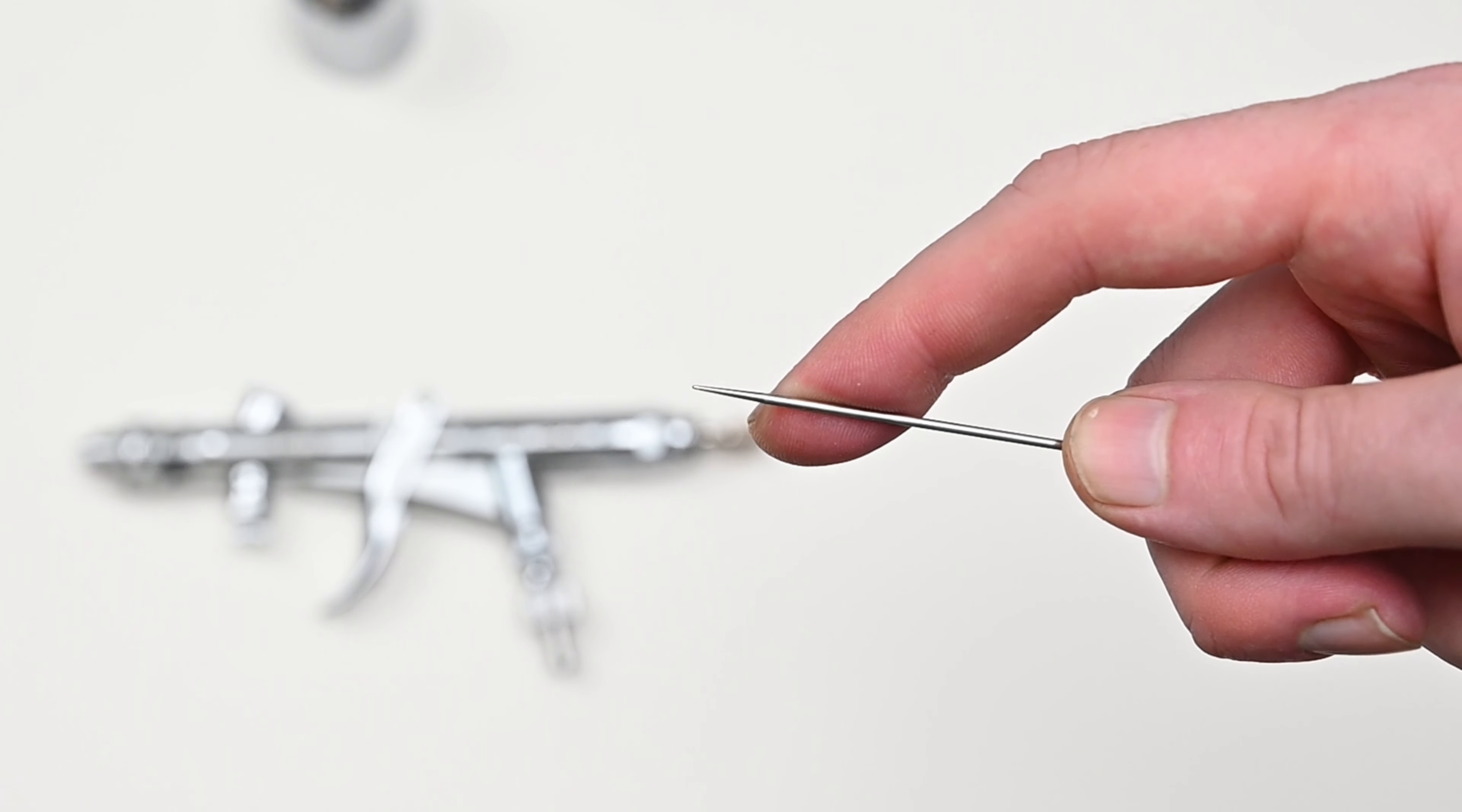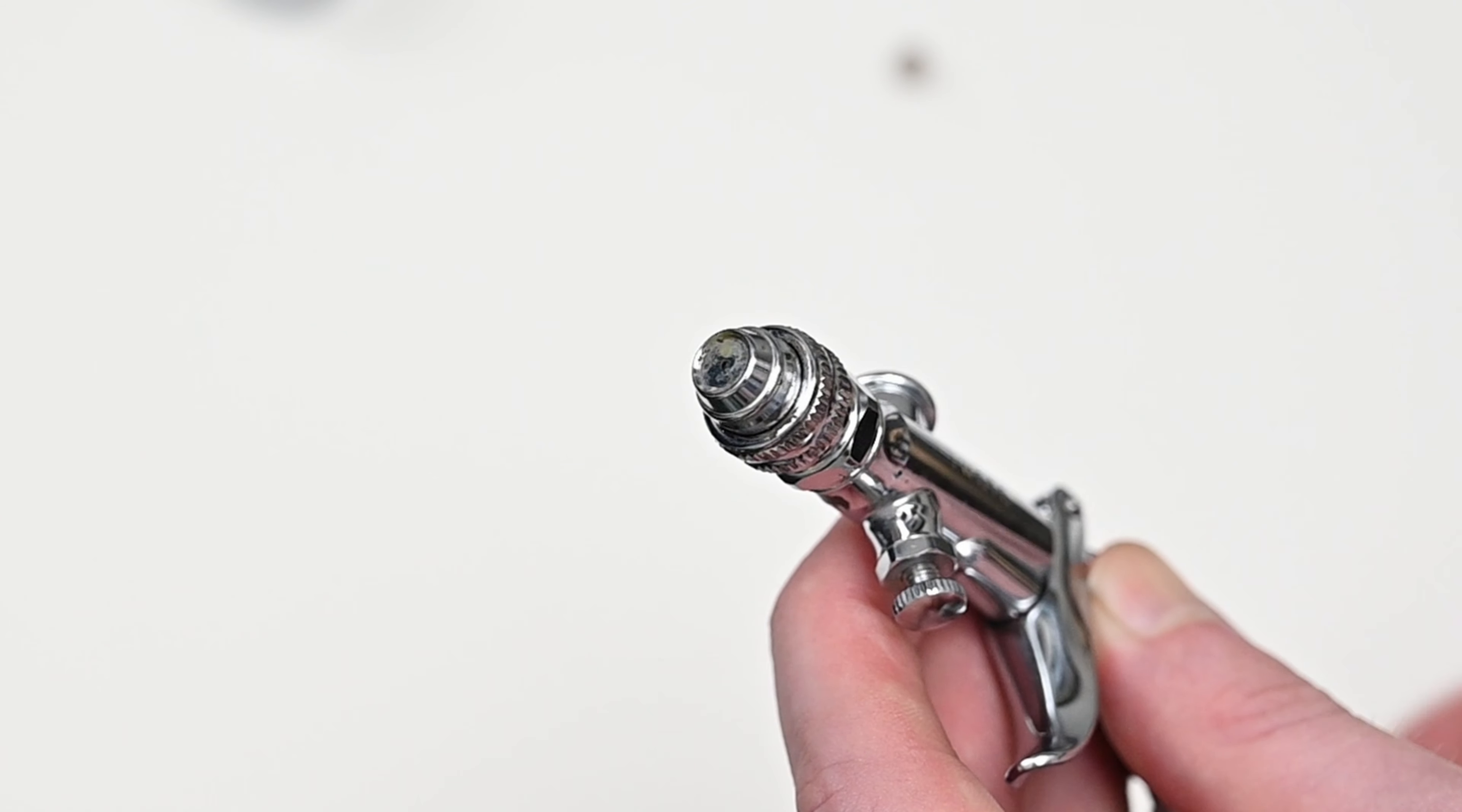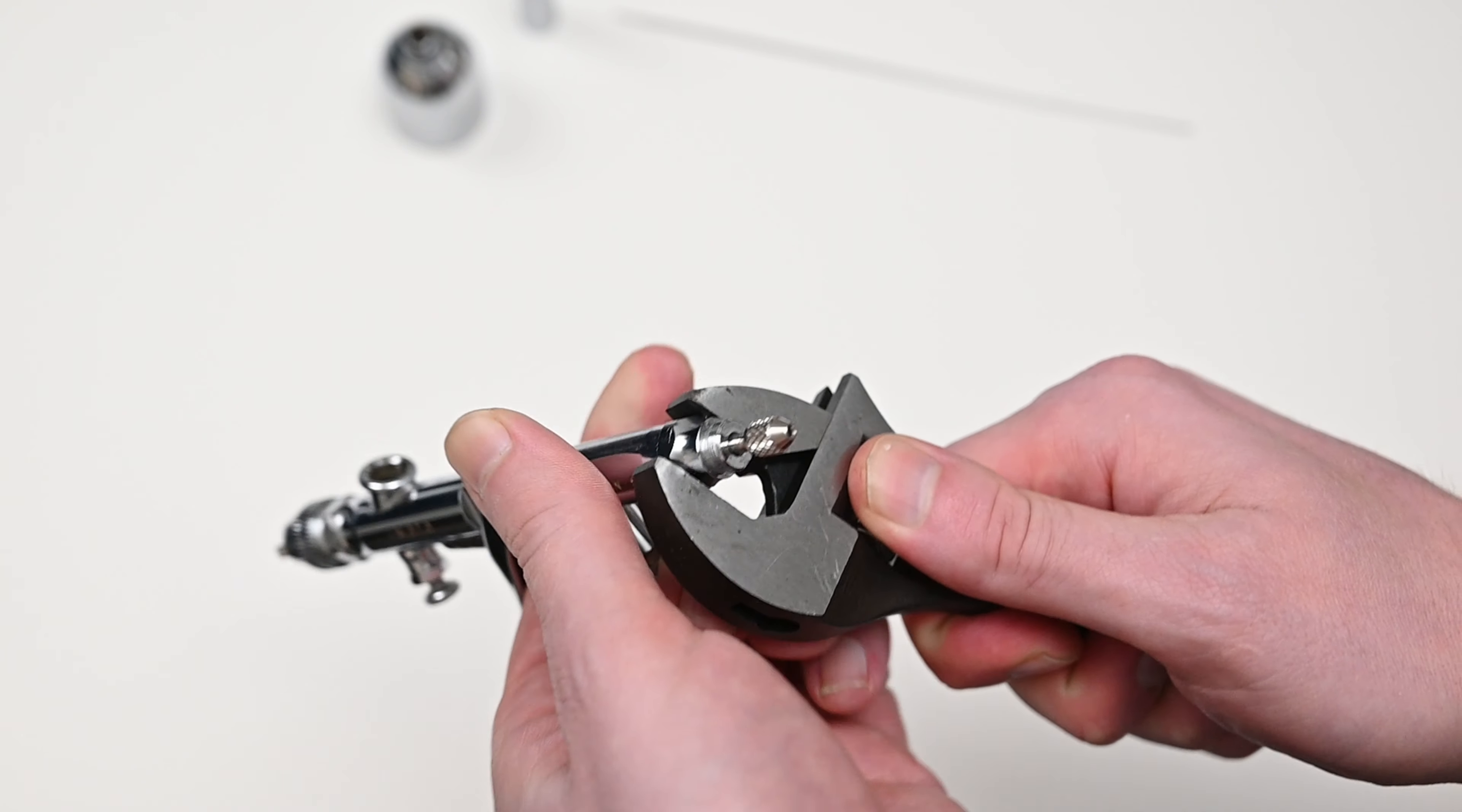This needle is very interesting. It's a 0.5 millimeter but it doesn't come to a sharp point. The end of it is blunt and kind of rounded off. Unlike other airbrush designs the tip of this needle doesn't protrude past the nozzle. As you can see here it remains flush.